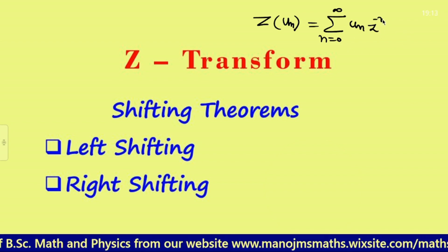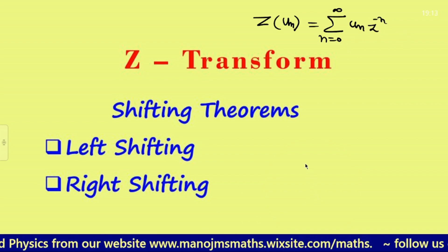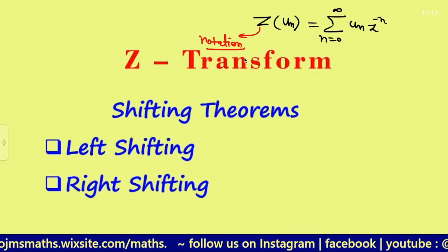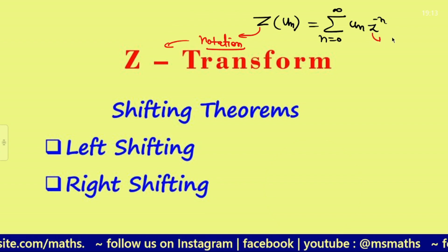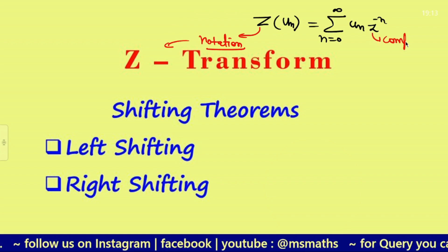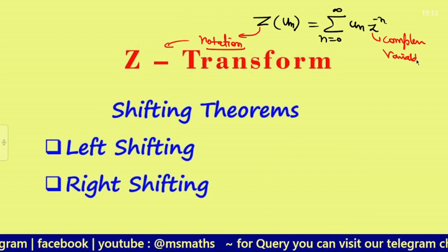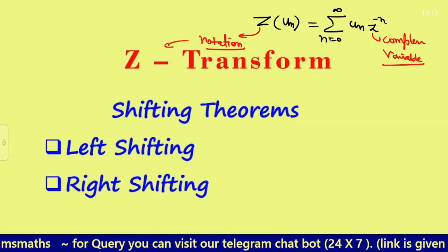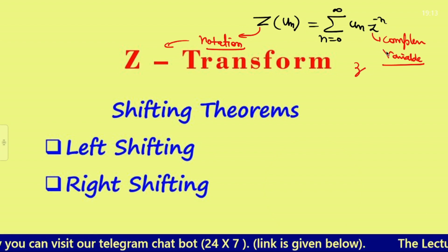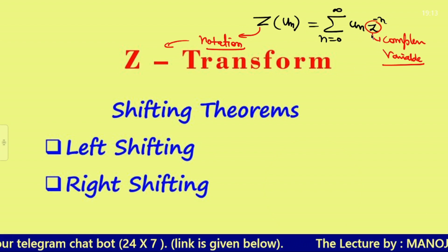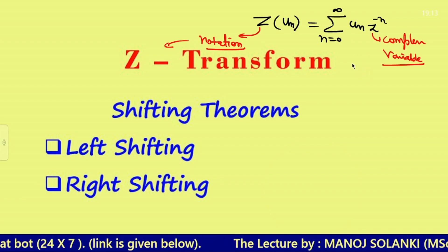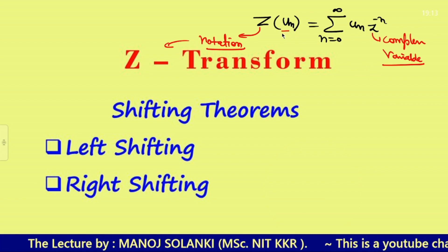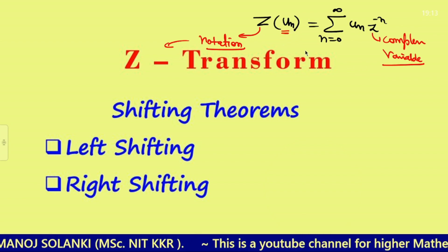Remember one thing here: this Z and this z are different. The Z here is basically the notation for Z transformation, and the z is the complex variable. So these two Z's are different. I will use this notation throughout. This is the definition, and this is general — when we have the function u(n).